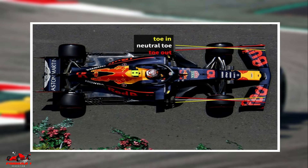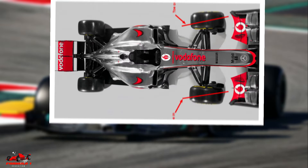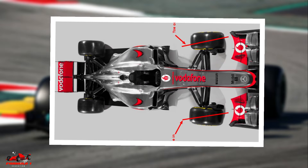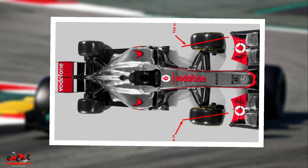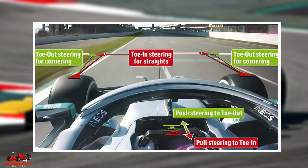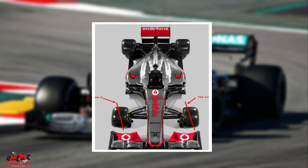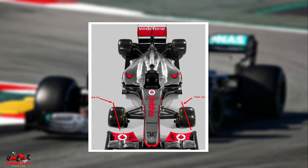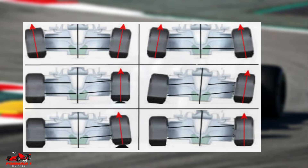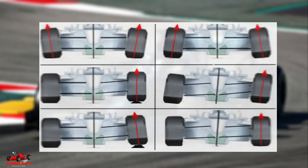If you were to look at an F1 car from above, the angle of the wheels relative to the center line of the car is referred to as toe. Positive toe occurs when the wheels point inward, and negative toe occurs when the wheels point away from the center line of the car. The angle created by the tire in relation to the center line is referred to as the toe angle.